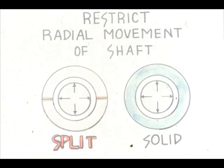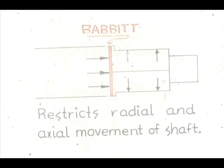The two basic types of sleeve bearings — the split sleeve and the solid sleeve — were designed to restrict the radial movement of the shaft during operation. You will also encounter variations to these types. Here is a common variation: sleeve bearings with a thrust shoulder, which are designed to restrict both the radial and axial movements of the shaft.